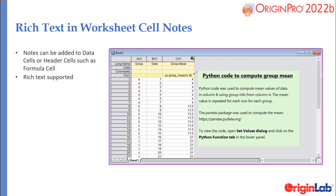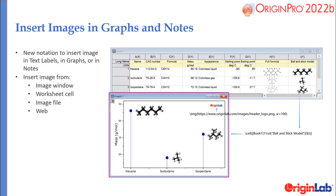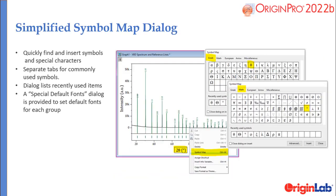Worksheet cell notes also now support rich text formatting. Origin now supports inserting images in graphs or notes. Images can come from an image window, worksheet cell, image file, or the web.